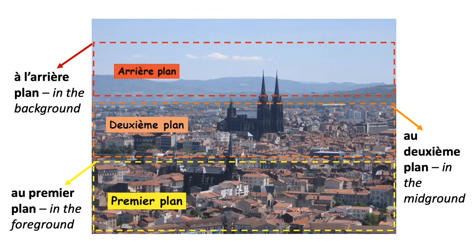Au premier plan — In the foreground. Au deuxième plan — In the mid-ground. Et à l'arrière plan — In the background. So the expressions we have just learned are essential for describing the position of people or objects in relation to each other in the image. They're essential for describing the physical details in the image — what you can see.